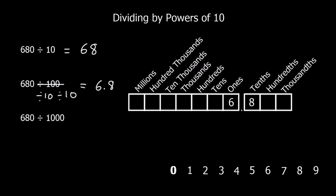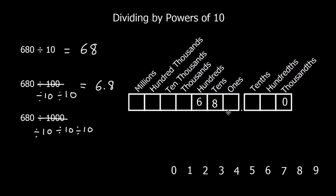We also have 680 divided by 1,000. Dividing by 1,000 is the same as dividing by 10 three times. Starting with 680 and moving all the digits down three times, we get 0.680. We don't need the trailing zero, but we do write the leading zero, giving us 0.68.